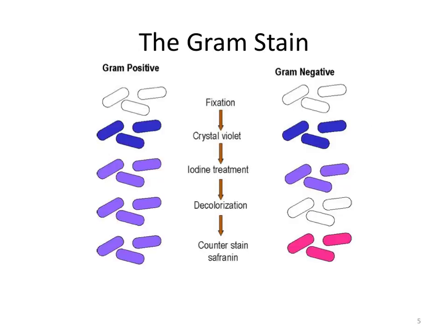In class, you did a gram stain on two bacteria: a gram stain on gram-negative E. coli and a gram stain on gram-positive Bacillus cereus. I included this figure in your lab handout, but let's review it now that you've actually done the technique and this kind of experiment.